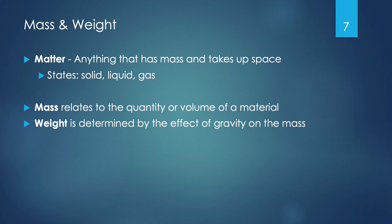Mass and weight are often used interchangeably, but they're not exactly the same thing. Weight is determined by the effect of gravity on mass. For example, I might weigh 130 pounds on Earth, but on the moon, gravity is different, so I'd weigh much less. However, my mass on both the moon and Earth is exactly the same. Mass is a more standard and stable measurement, whereas weight is affected by gravity. Although weight is what we commonly use, what we should really discuss more often is mass.